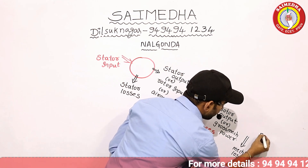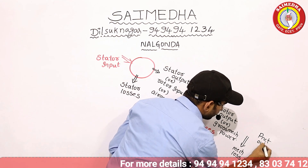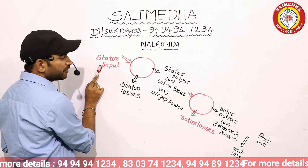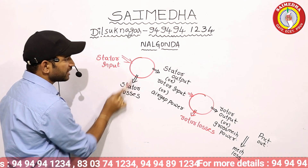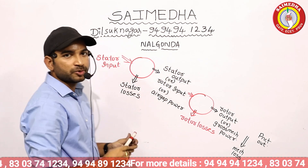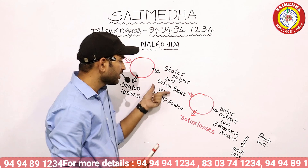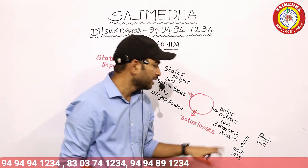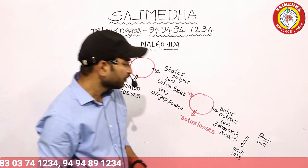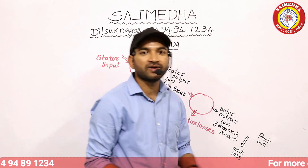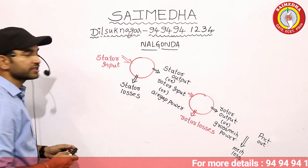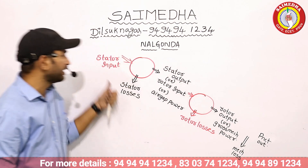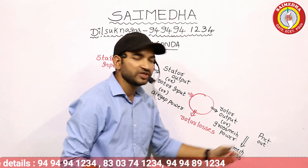From the gross mechanical power, if we subtract the mechanical losses, we get the net output power. This is very, very important for induction machines. The overall efficiency is the net output power divided by the stator input.